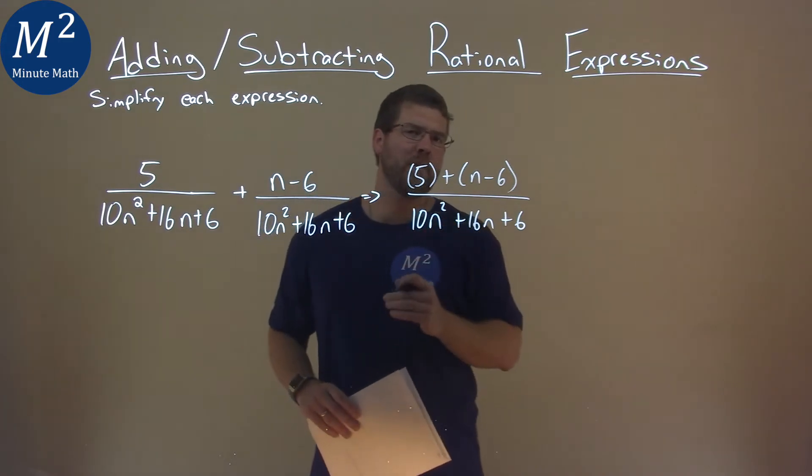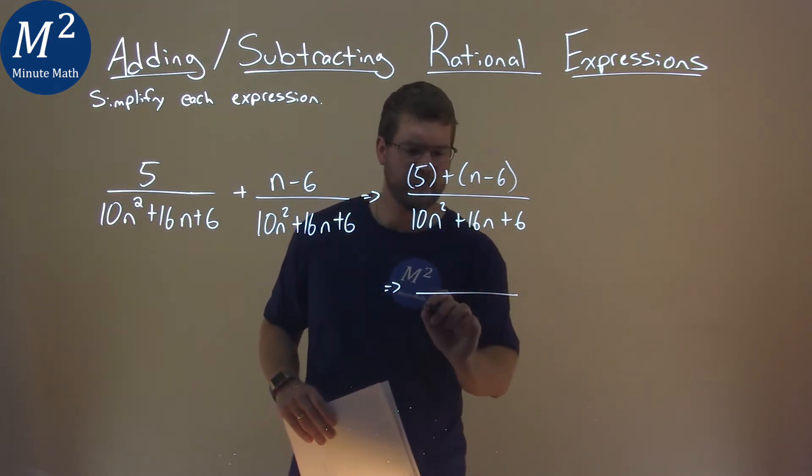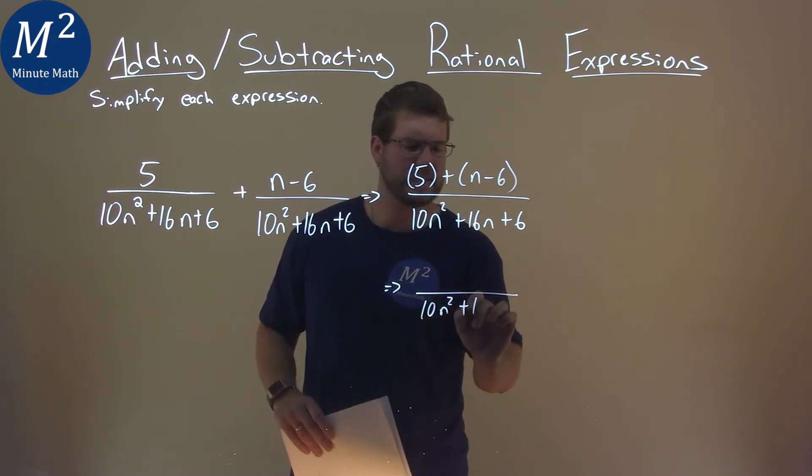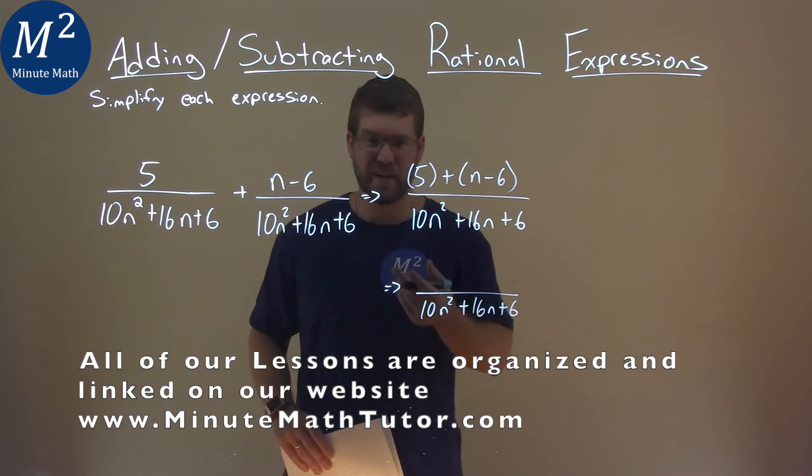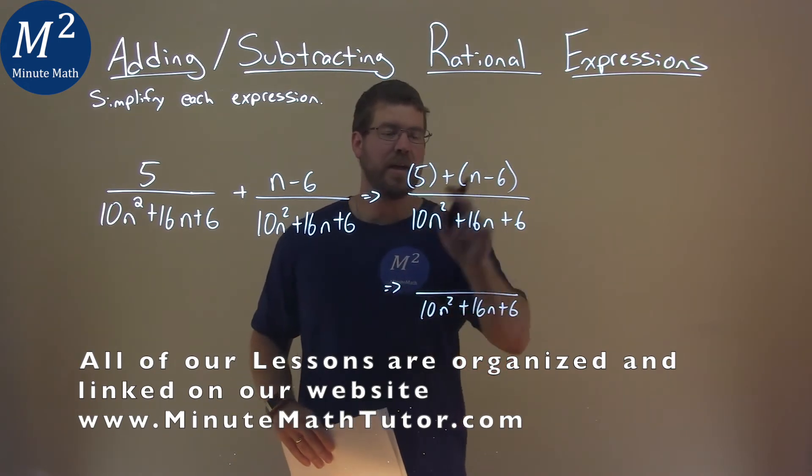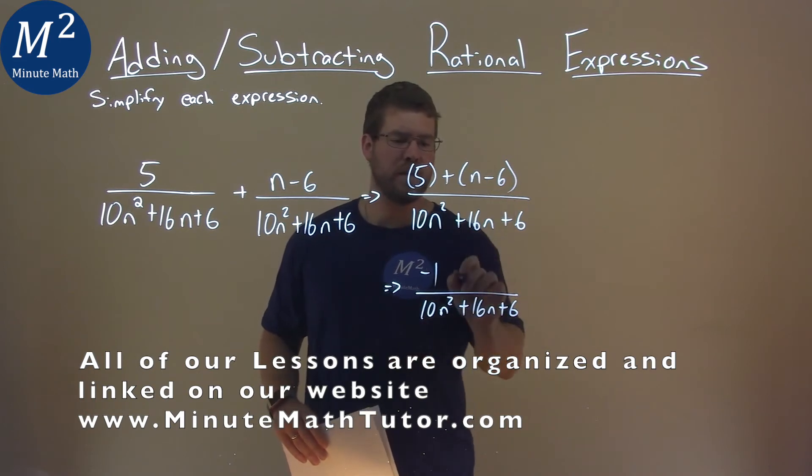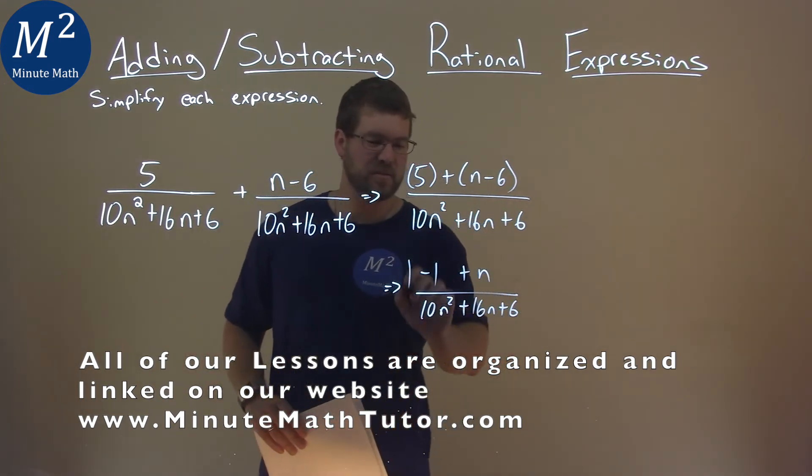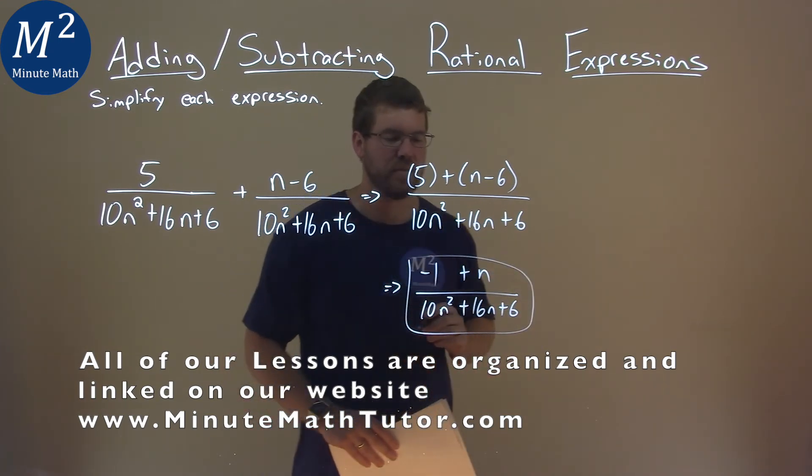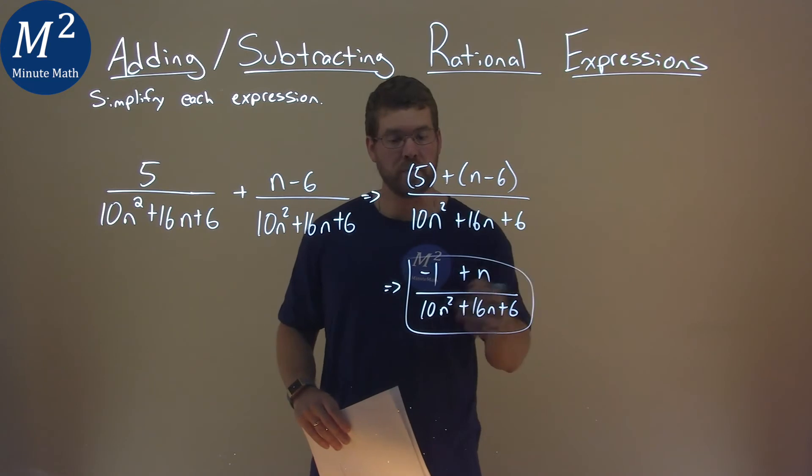So where do we go from here? Well, our denominator, we keep the same. Let's leave that there: 10n squared plus 16n plus 6. The numerator, we combine our like terms. 5 and a negative 6 add together to be a negative 1. We just have that n come down, and we're basically done here. There's nothing else that we can do to simplify this, and so my final answer is just negative 1 plus n over 10n squared plus 16n plus 6.